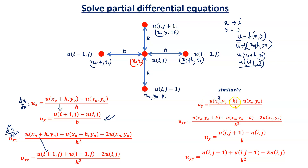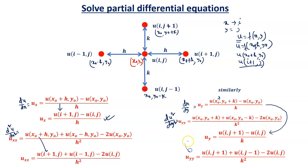Similarly for y, du/dy equals [u(x₀, y₀ + k) − u(x₀, y₀)] / k, written in i-j form as [u(i, j+1) − u(i, j)] / k. And u_yy, the second derivative with respect to y, is [u(x₀, y₀ + k) + u(x₀, y₀ − k) − 2u(x₀, y₀)] / k², or in i-j form: [u(i, j+1) + u(i, j−1) − 2u(i, j)] / k². That is how we discretize the differential form.